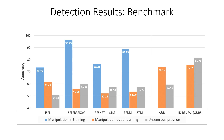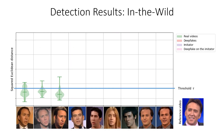ID Reveal even performs well on data of different compression levels. Finally, we apply ID Reveal to videos downloaded from YouTube. We show the distributions of distance metrics with a violin plot using a single reference video as shown on the right. We can observe that the lowest distances are relative to real videos.